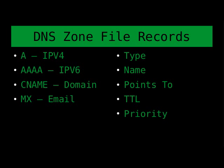Other DNS servers that are not authoritative for that domain — like an ISP's DNS server — can go and grab the domain record from the authoritative server and keep it cached. Individual computers also usually keep records cached. The TTL tells them when they should stop relying on their cached information and go get the current record back from the authoritative server.